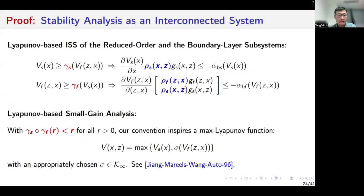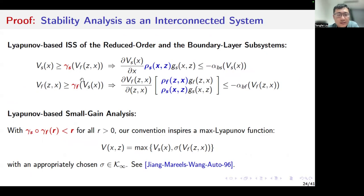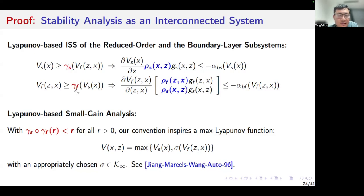So now we have Lyapunov-based ISS of both the reduced order and the boundary layer subsystems. Moreover, we are using gain functions to characterize the interaction between the two subsystems. So it is quite natural for us to apply Lyapunov-based small-gain analysis to the singularly perturbed system with the interconnection gains gamma-S and gamma-F satisfying the small-gain condition. Our construction inspires a max Lyapunov function.